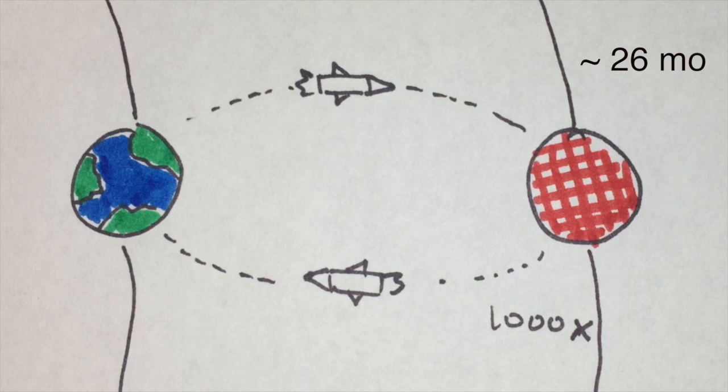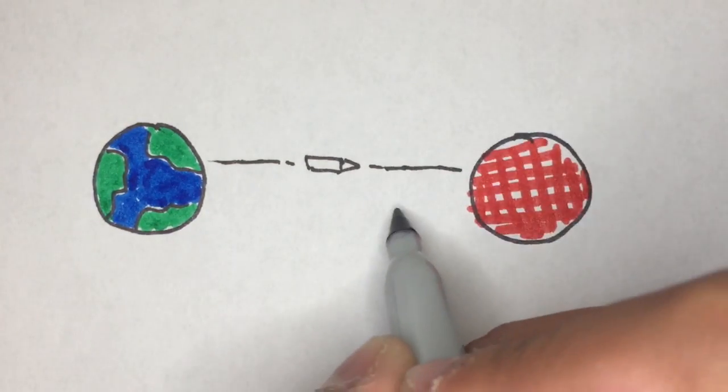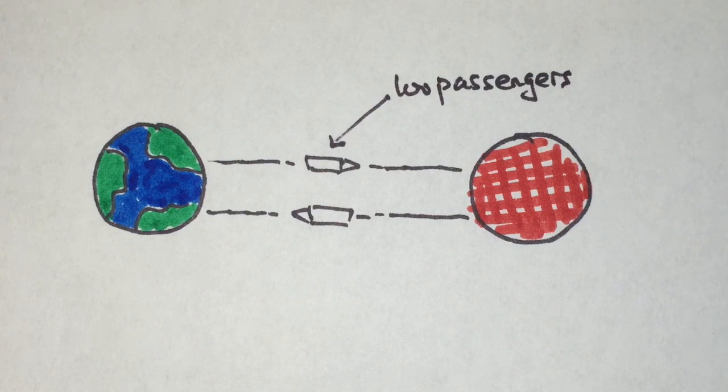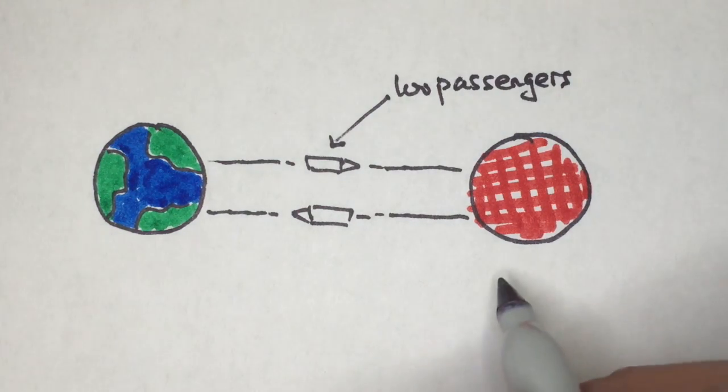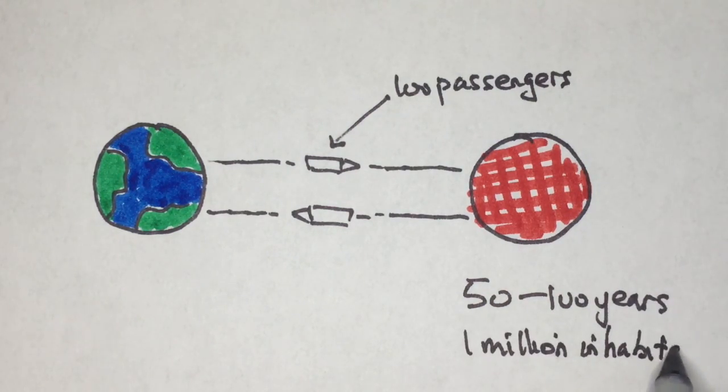The whole spaceship system is termed as the Interplanetary Transport System. Eventually, there will be a thousand of these ITS spaceships flying around with each spaceship carrying 100 people. With this plan in mind, we should be able to get over a million people on Mars within 50 to 100 years, with two of these space trips every year.